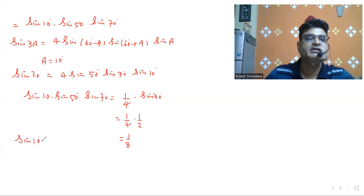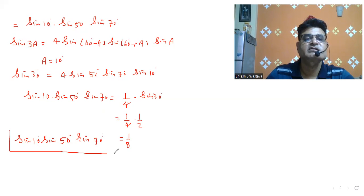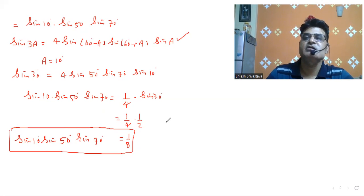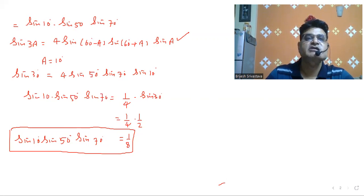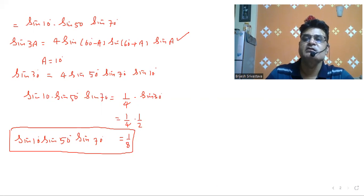So sin 10° · sin 50° · sin 70° = 1/8. You can see that if you remember this formula, we can solve such problems directly. We will discuss more in the next video. Thank you.